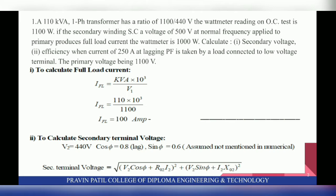So first Numerical: a 110 kVA single phase transformer has a ratio of 1100/440 V. The Wattmeter reading on OC test is 1100 Watt. If the secondary winding is short circuited, a voltage of 500 V at normal frequency applied to primary produces full load current, and the Wattmeter reads 1000 Watt. Calculate: first, secondary voltage; second, efficiency when a current of 250 Ampere at lagging power factor is taken by a load connected to the low voltage terminal.